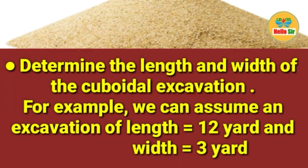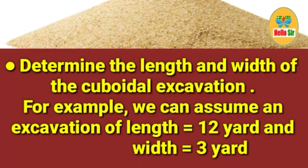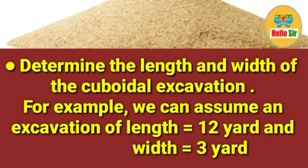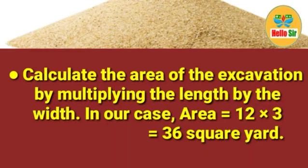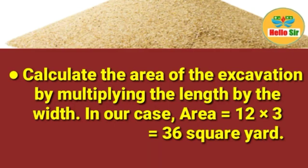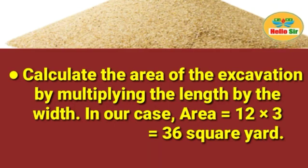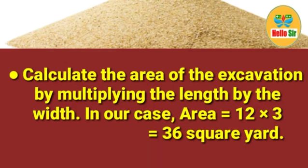For example, we can assume an excavation of length equal to 12 yards and width equal to 3 yards. Then calculate the area of the excavation by multiplying the length by the width. So in our case, area equals 12 into 3, which is 36 square yards.